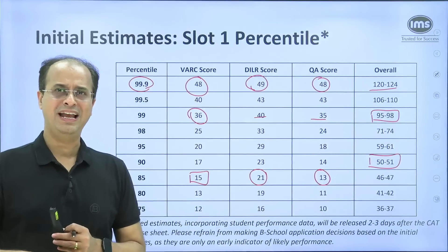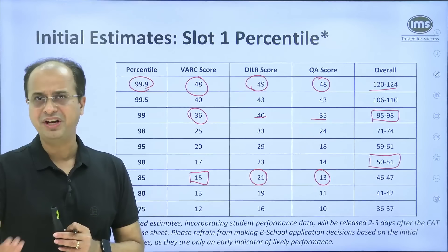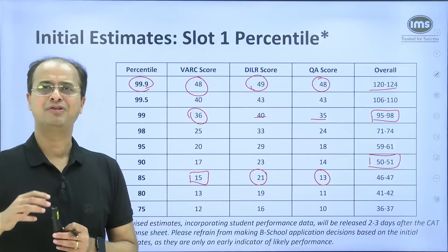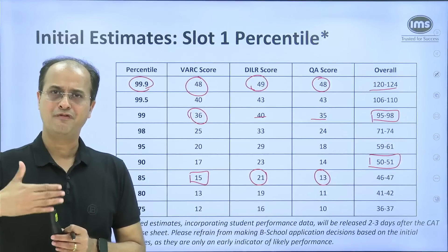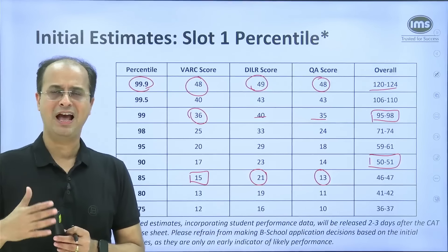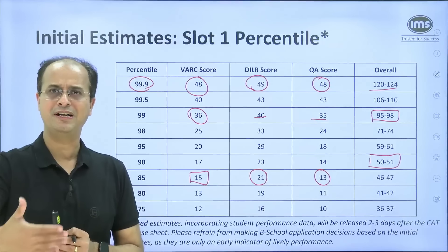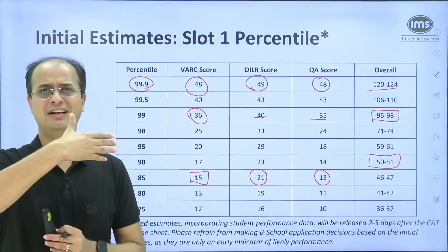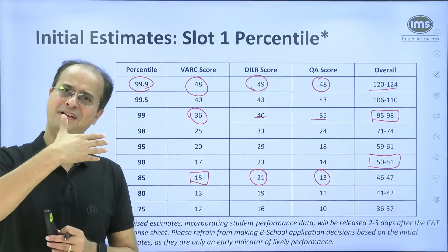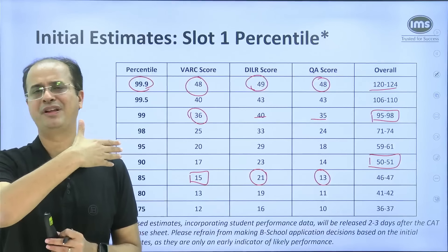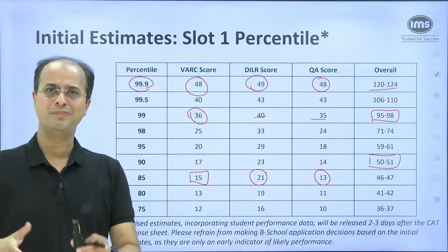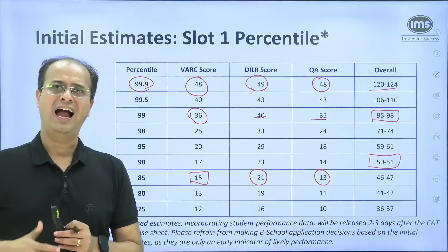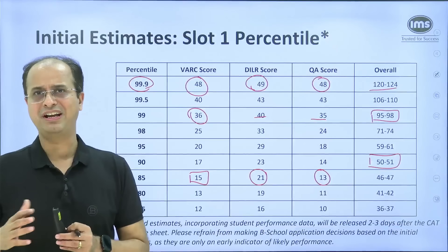For students taking Slot 3 — Slot 2 is already done — I would say your strategy will need to include far more attempts in the DILR and QA sections compared to what you might do in a typical SimCat or what you did in CAT23. I wish you the best for your Slot 3 attempt — please be with us throughout the day.